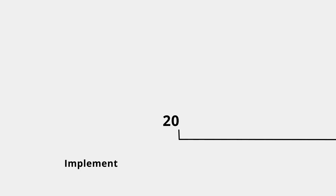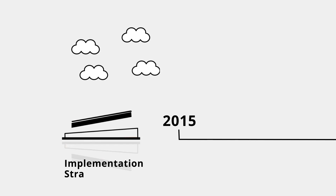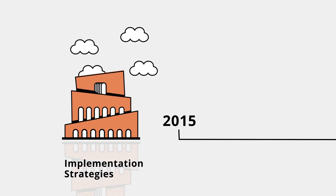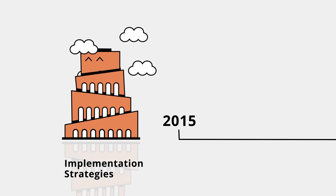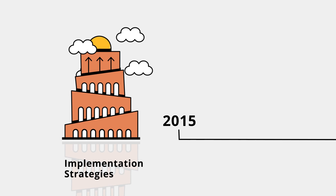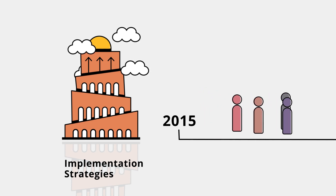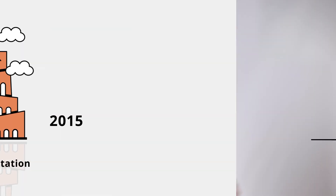Back in the olden days of implementation science, before 2015, implementation strategies were described as having a Tower of Babel problem. Everyone was walking around using different terms for the same things and similar terms for different things.